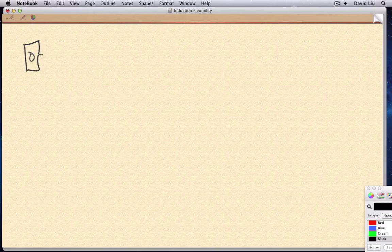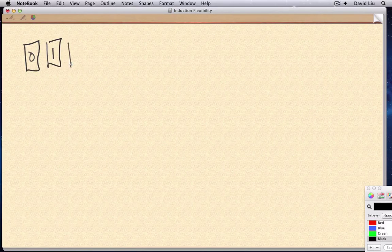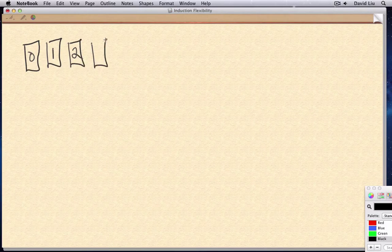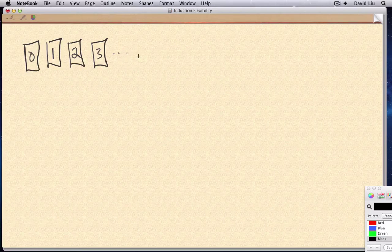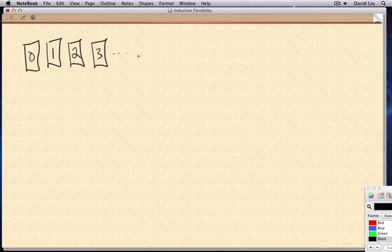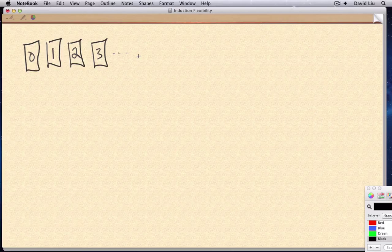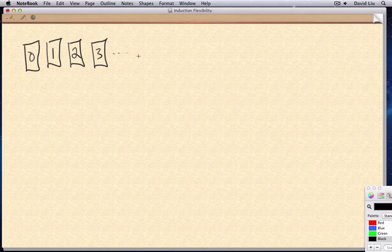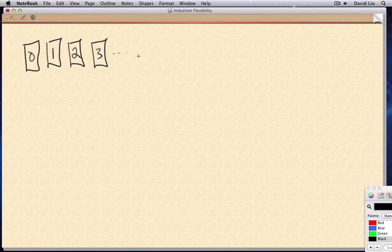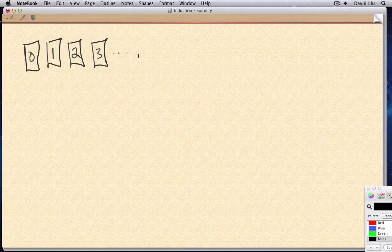So first of all, recall the domino metaphor that I gave when I first introduced induction. We had a sequence of dominoes that we all wanted to fall. Each domino, numbered with a natural number starting at zero, and two things were necessary to prove that all the dominoes would fall.